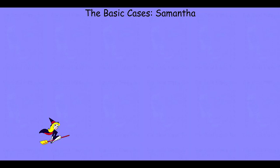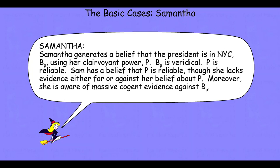The first case is Samantha. Samantha generates a belief that the president is in New York City — we'll call that belief BP — using her clairvoyant power, which we'll call P. The belief is in fact correct, and her clairvoyant power Bonjour stipulates is one hundred percent perfectly reliable. Samantha has a belief that her clairvoyant power is reliable, though she lacks any evidence for or against that belief.